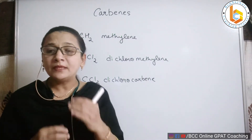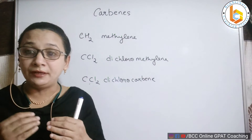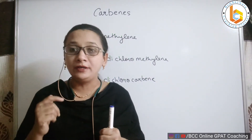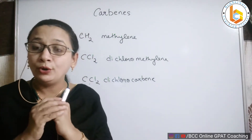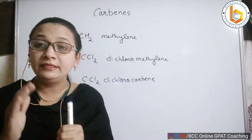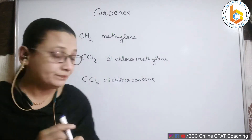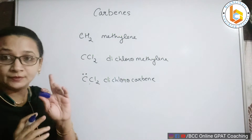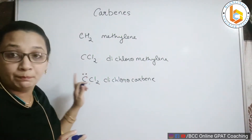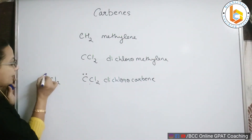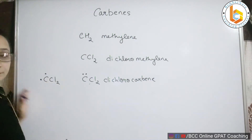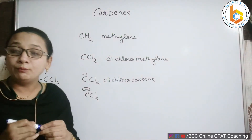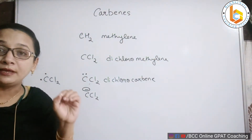Now what is the difference between carbene, carbocation, and carbanion? A carbene contains two non-bonded electrons. These two non-bonded electrons can either be paired or they can be unpaired. This can also be represented as CCl₂ with a negative charge, because two non-bonded electrons together can represent a negative charge.